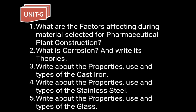Fifth unit. First: what are the factors to consider when selecting materials for pharmaceutical plant construction? Next: what is corrosion and write its theory? Next: write about the property, use and types of cast iron.